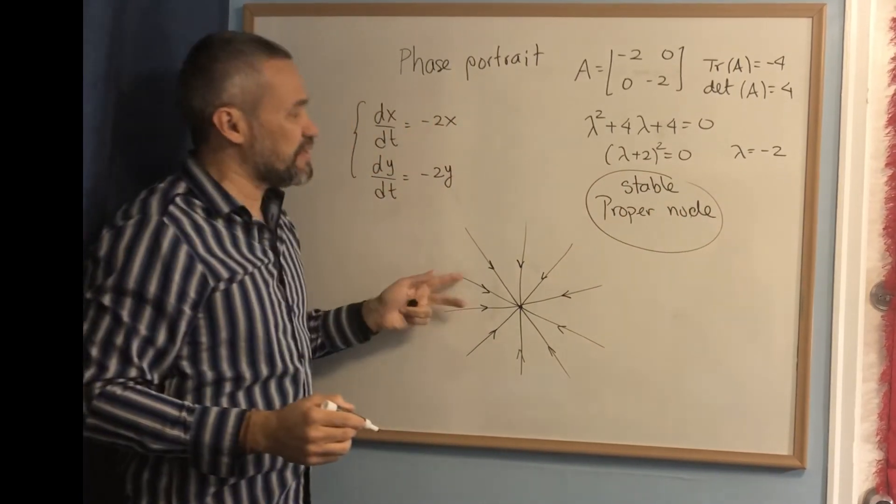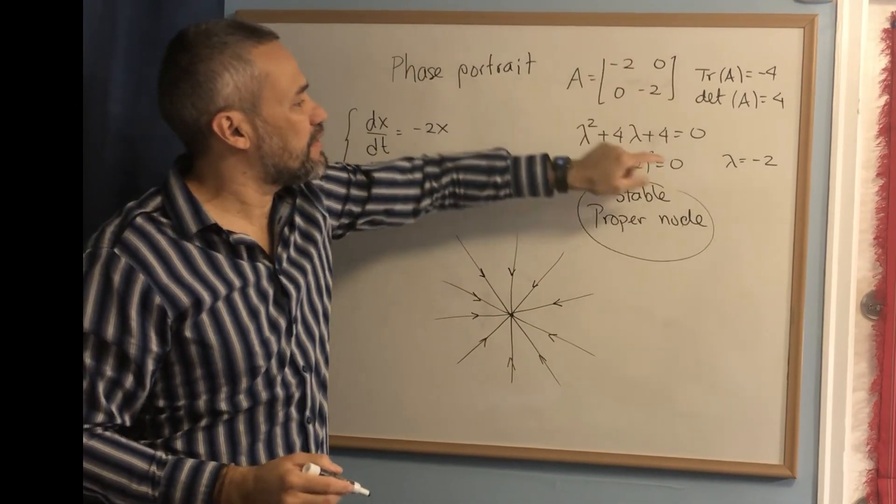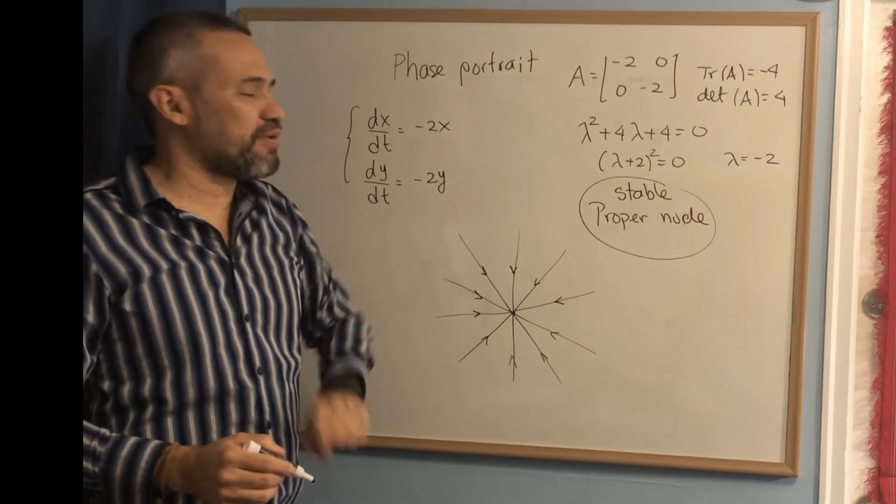Then, this is the phase portrait when we have that the matrix is diagonal and there is only one eigenvalue, a proper node.